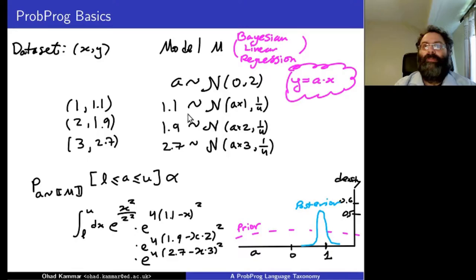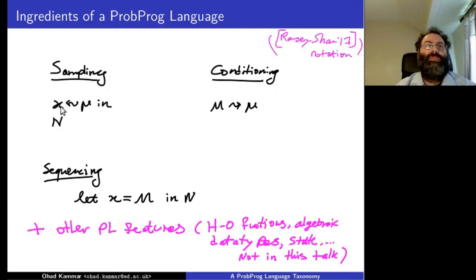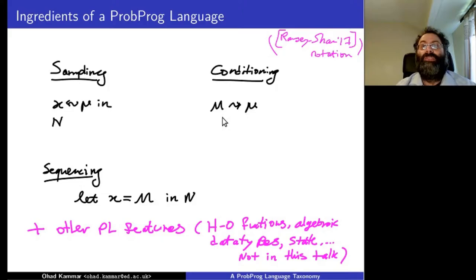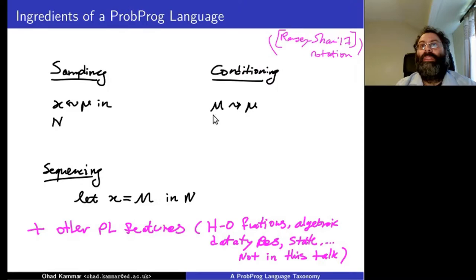Abstracting from this example: in a probabilistic programming language we have two core constructs — one for sampling and one for conditioning. In the previous example we sampled a from a normal distribution. We can sample some x out of a distribution and bind it in the rest of the program. The conditioning construct says: given some value and some distribution, we update our distribution based on this value.